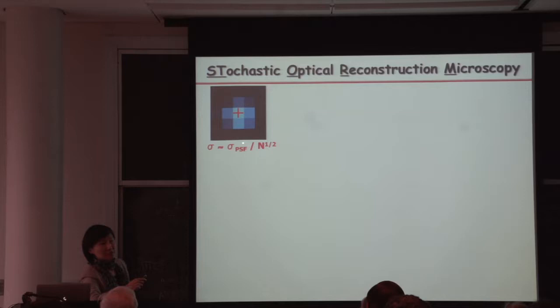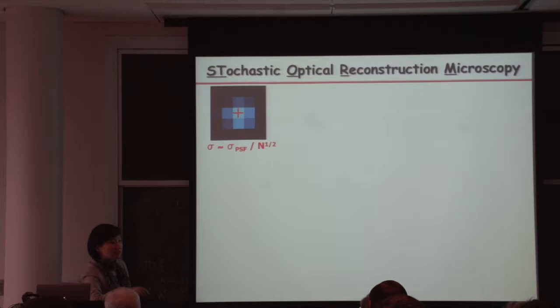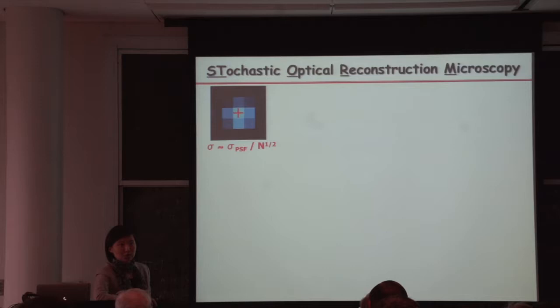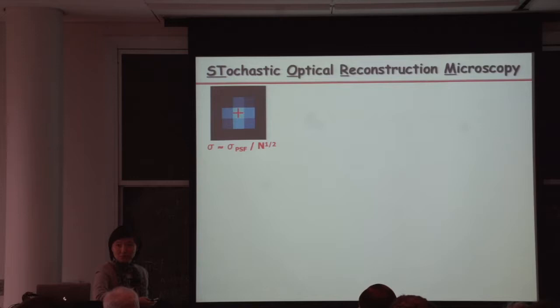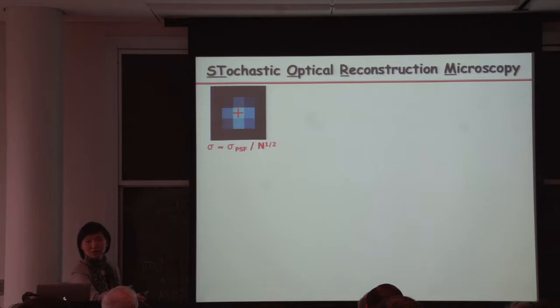The image of a single molecule is diffraction-limited — a single molecule is essentially a sizeless feature, yet its image is still a couple hundred nanometers wide. However, in the field of single molecules, it's been known for a long time that you can localize the central position of this image with extraordinarily high precision. Simply speaking, this localization precision is approximately the width of the image divided by the square root of the number of photons detected. If you detect 10,000 photons, the square root is 100, so 200 divided by 100 gives 2 nanometers — a few nanometer localization precision.